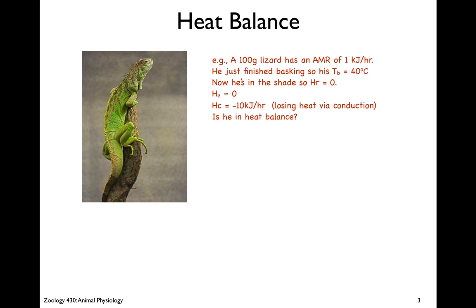Let's look at an example. Here's our cute little 100 gram juvenile iguana. He's been basking, so he's got an AMR of one kilojoule per hour. That's his active metabolic rate. He just finished, so his body temperature is now up at a toasty 40 degrees Celsius and he's pretty happy. You can see the little smile on his face. Now he's in the shade, so heat of radiation is zero. The heat of evaporation is also pretty much zero because he's got really thick keratin on his skin and doesn't evaporate much. The heat of conduction is minus 10 kilojoules per hour, so he's losing heat via conduction. Is he in heat balance?